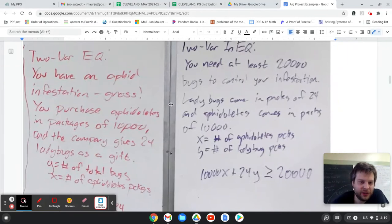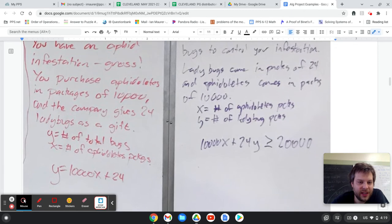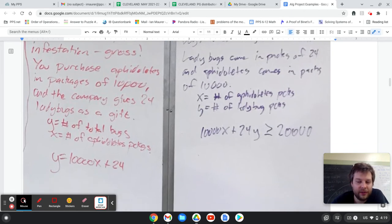So the two variable equation - you have an aphid infestation. You purchase aphidoletes in packages of 10,000, and you get 24 free ladybugs as a gift. So I think of the two things I don't know - how many packages were purchased and how many total bugs there were. And so I wrote a two variable equation, y equals 10,000x plus 24.